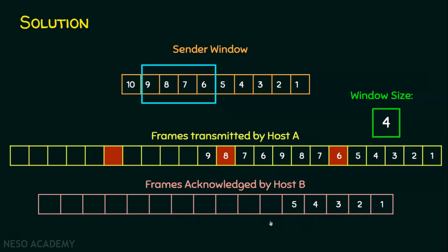After retransmission, frame 6 is now acknowledged. The sender sends the next frame in the buffer, which is frame 10. After sending frame 10, the sliding window moves. The sender then receives acknowledgement for frame 7, and slides the window again — there are no more new frames to send, so the window now points to frames 8, 9, and 10.